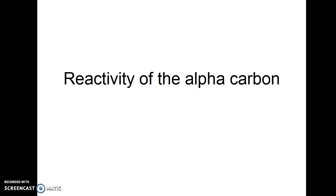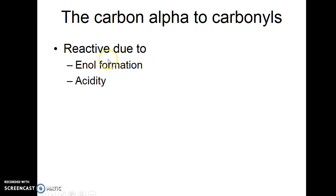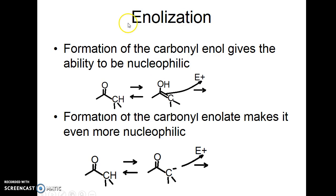We're going to look at the reactivity of the carbon alpha to a carbonyl. This carbon is reactive because an enol can form, and then that pi bond is able to do electrophilic addition, and that carbon is relatively acidic. The enol can form through tautomerization and then the pi bond reacts with an electrophile. If we treat a carbonyl with a base we form the enolate, which can then attack the carbonyl. So we have two modes of reactivity of that alpha carbon.